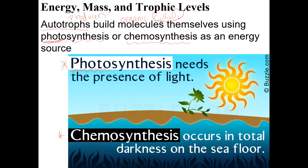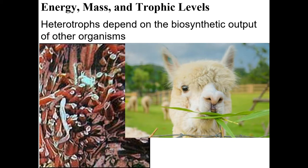Chemosynthesis is very rare, occurring in total darkness using chemicals instead of sunlight to start the food web. Heterotrophs, also called consumers, depend on either other heterotrophs or producers. An alpaca eating a plant is a consumer eating a producer in a photosynthetic food web. In a chemosynthetic food web — like deep-sea vents — crabs eat tube worms that have symbiotic bacteria performing chemosynthesis.